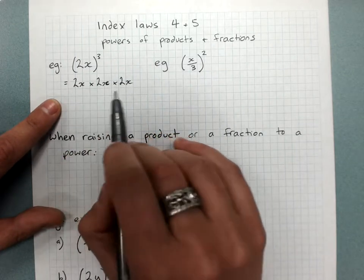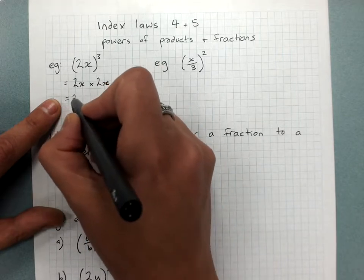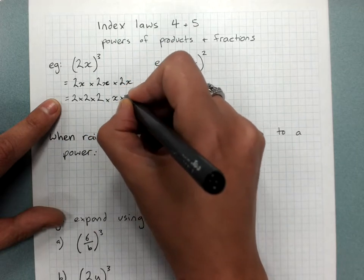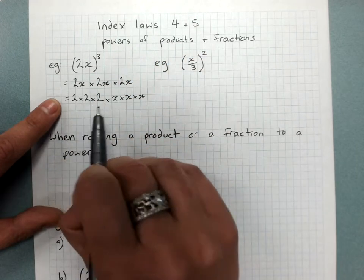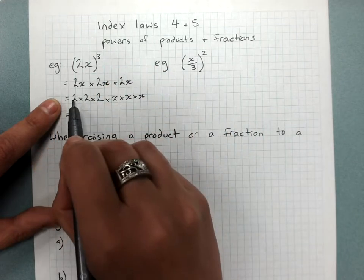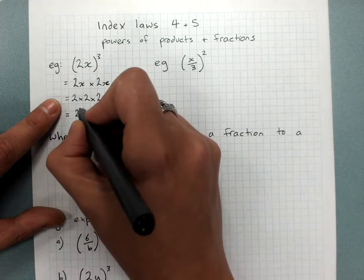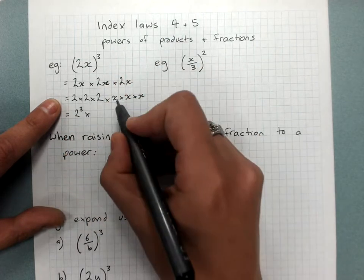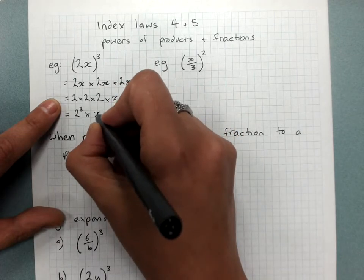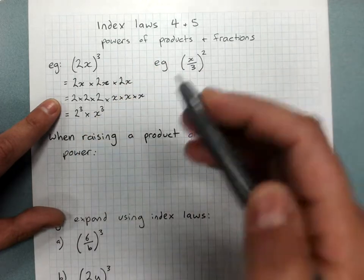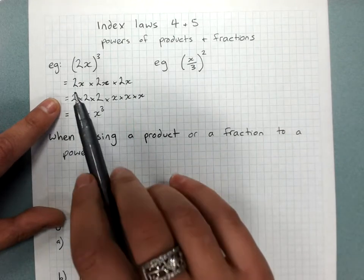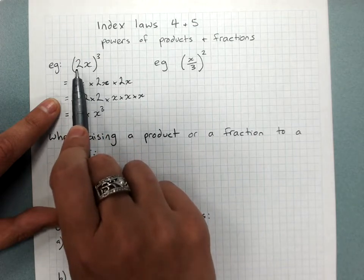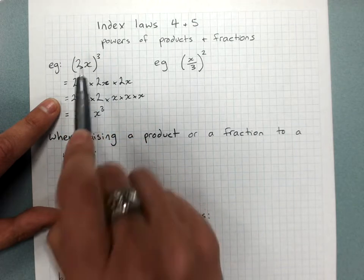Multiplication is allowed to be rearranged, so this is actually 2 times 2 times 2 times x times x times x. Putting this back into index form, 2 times 2 times 2 is 2 cubed, times x times x times x which is x cubed. So we've cubed this part of the product and we've cubed this part of the product.